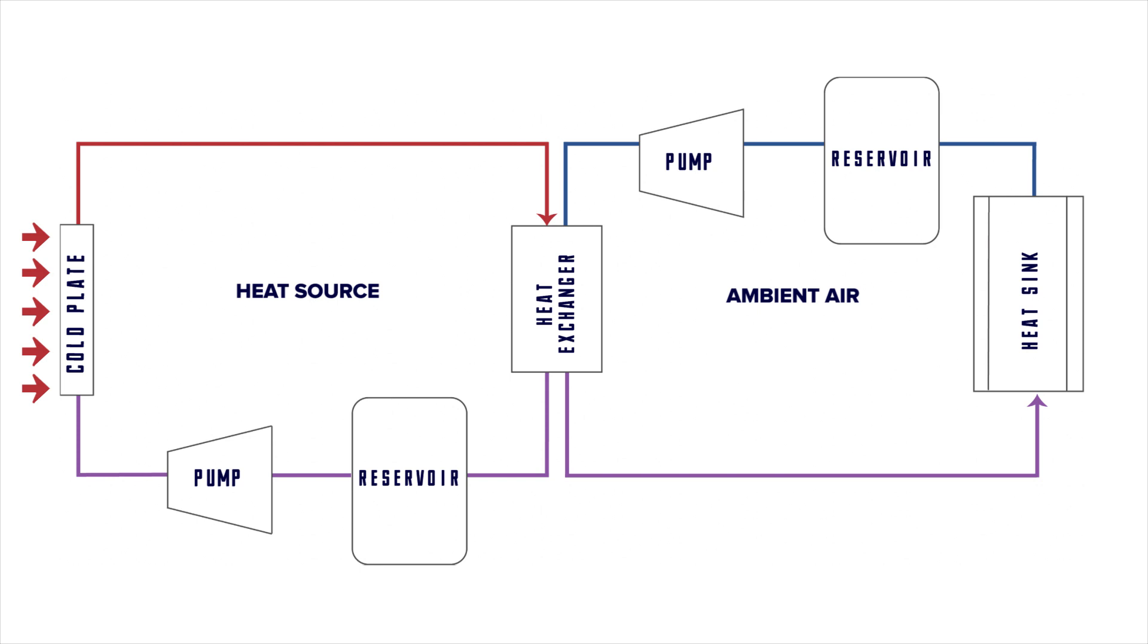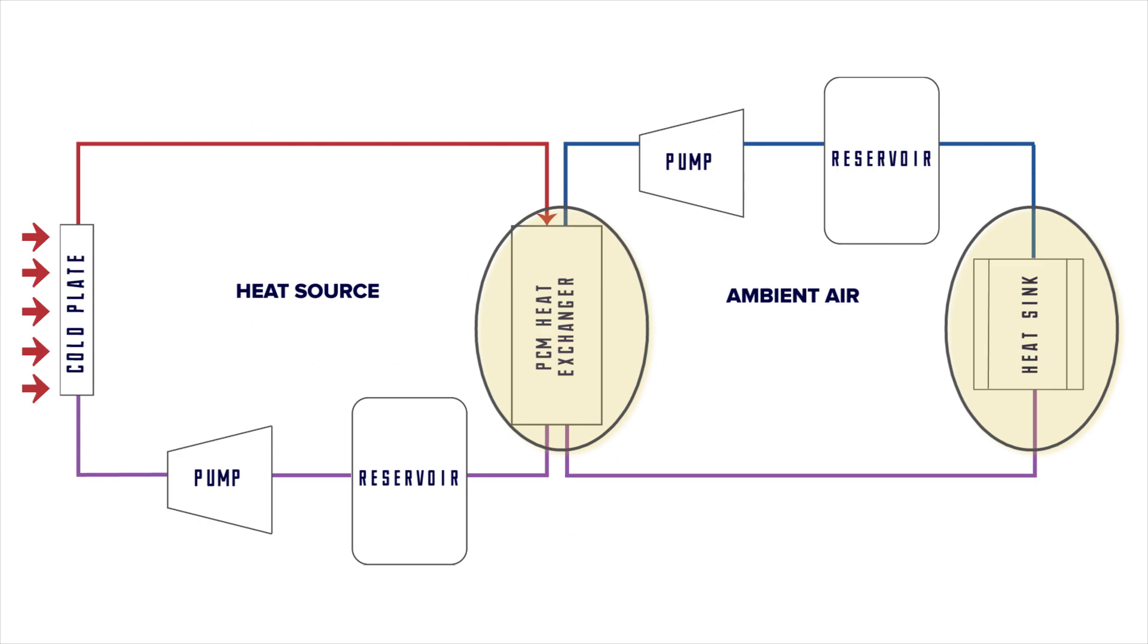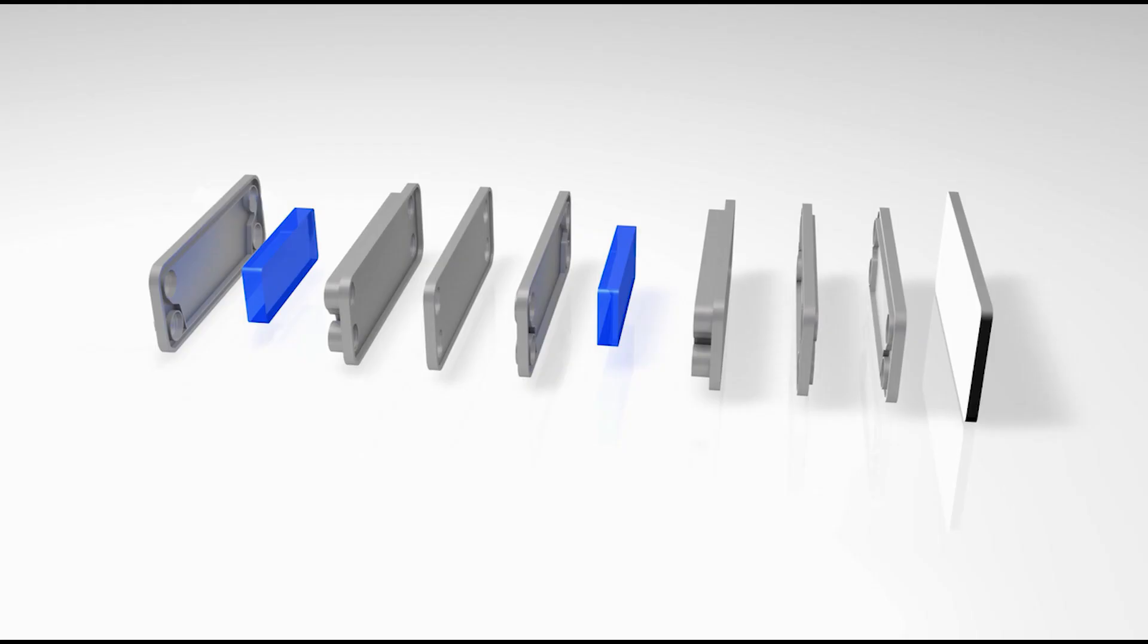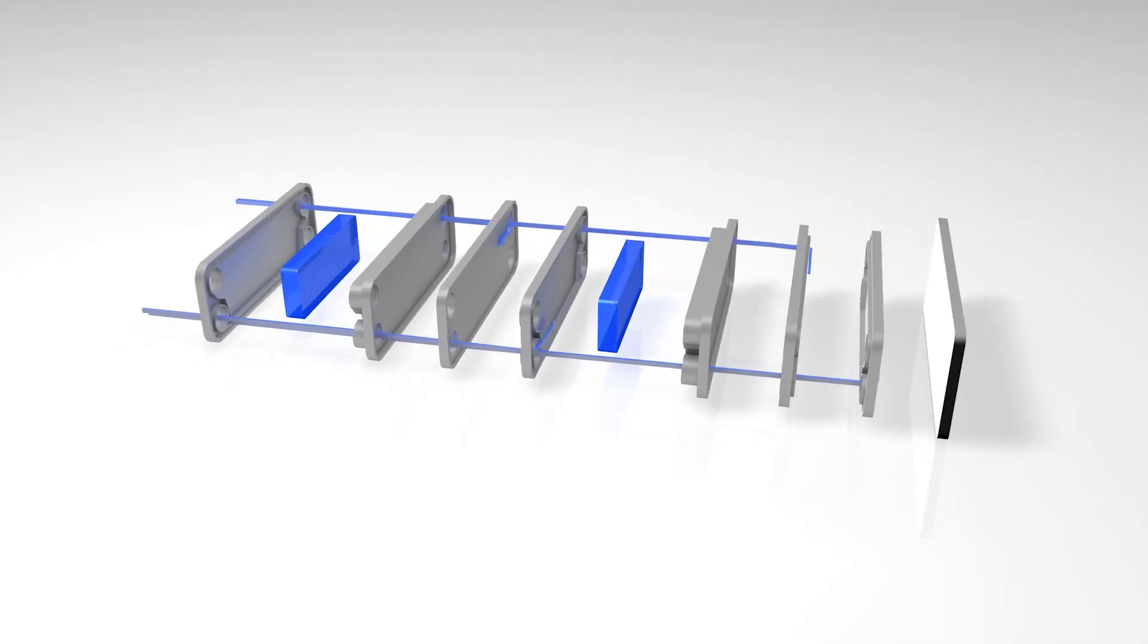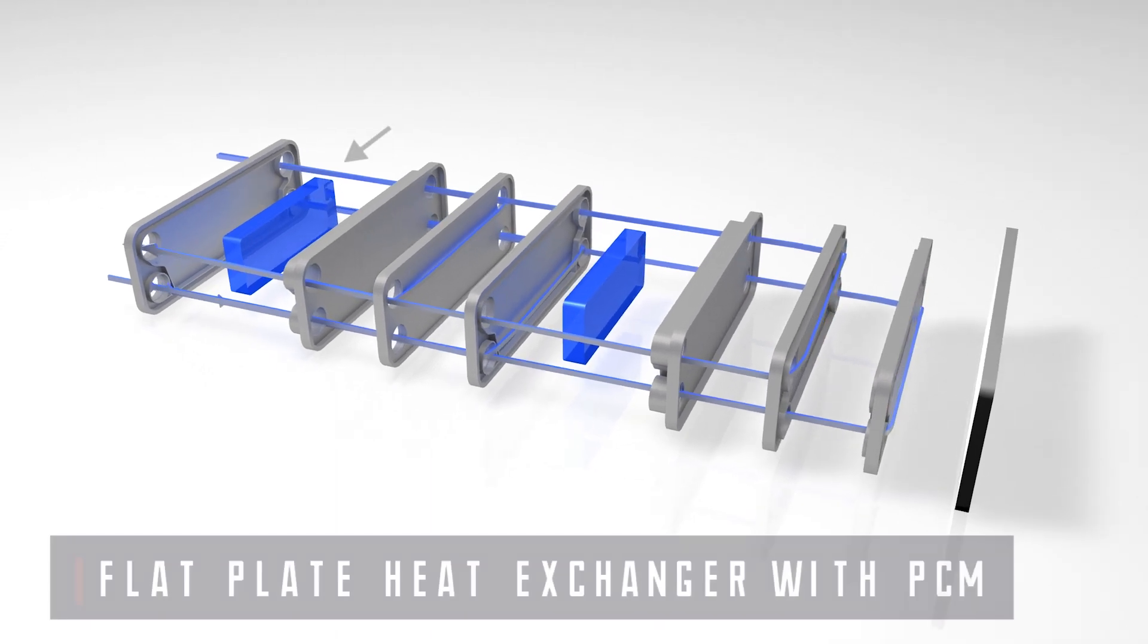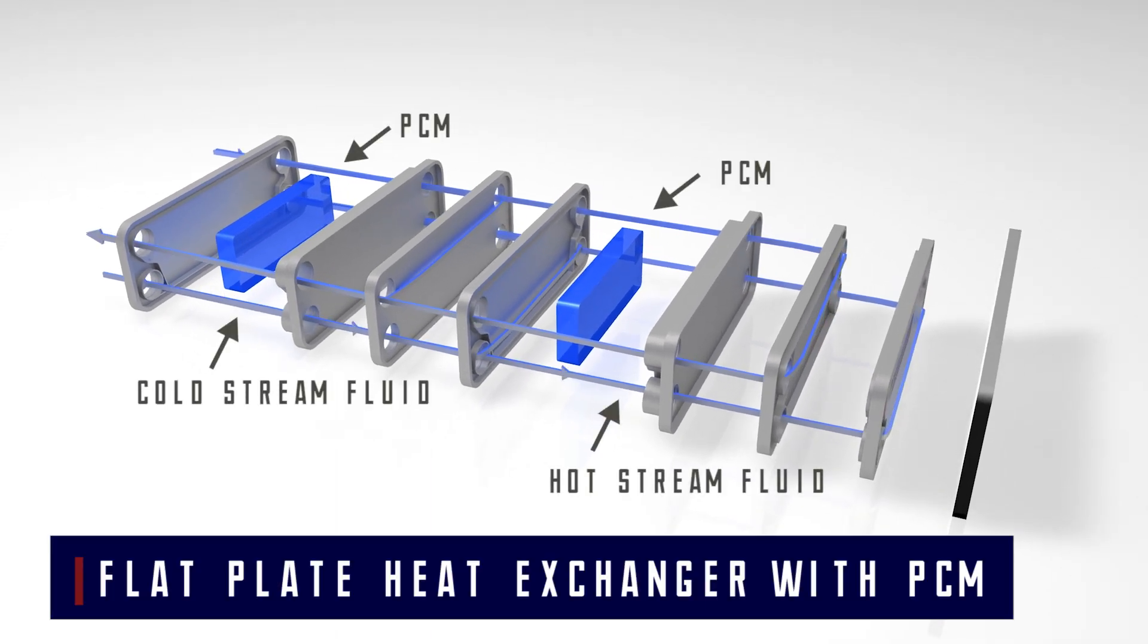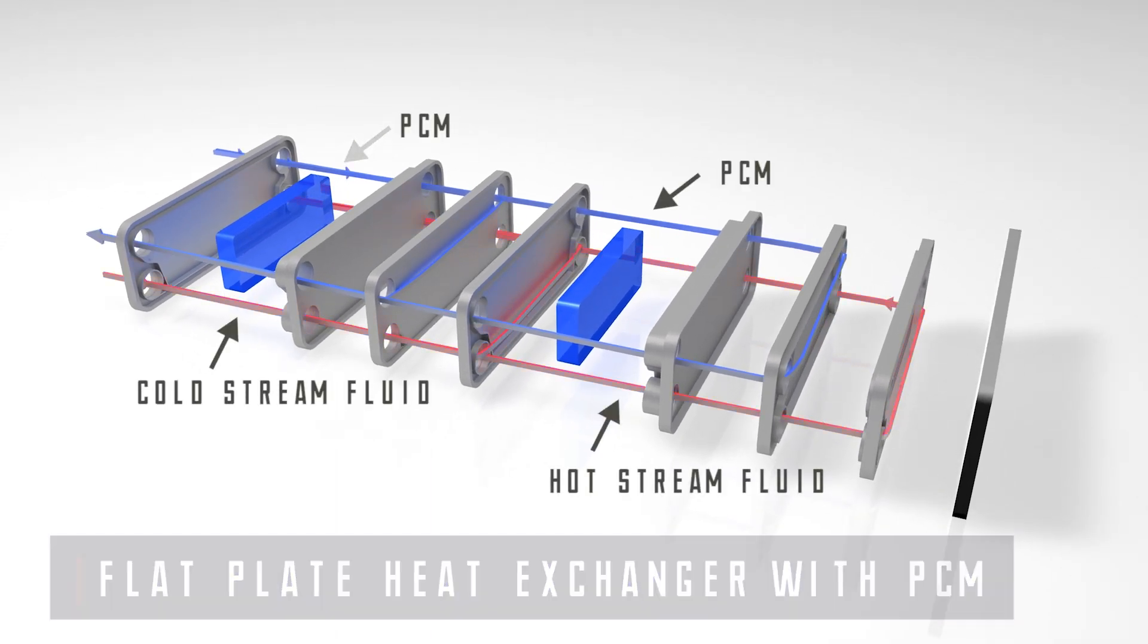In applications where the heat load is non-continuous, you can utilize PCM to dampen the heat load. The PCM achieves this goal by melting during the on portion and refreezing during the off period. This example shows an exploded view of a flat plate heat exchanger with PCM shown in between the hot and cold fluid streams.